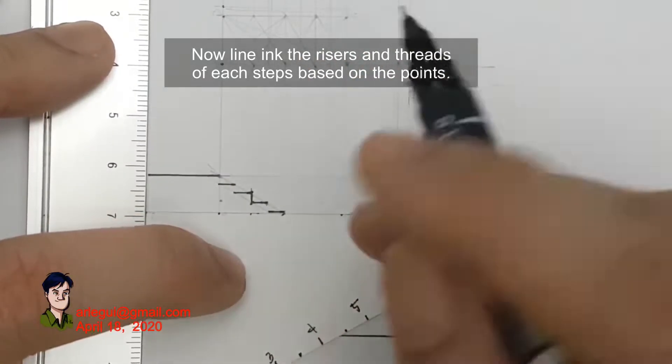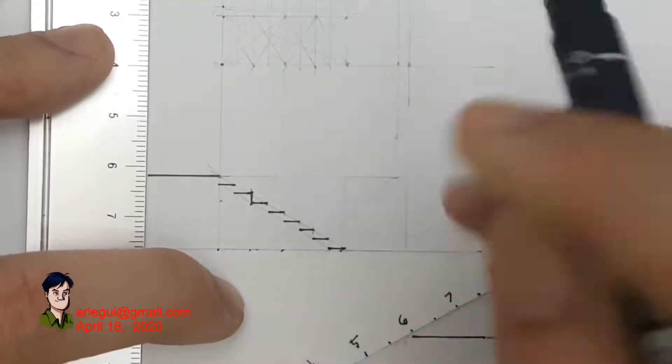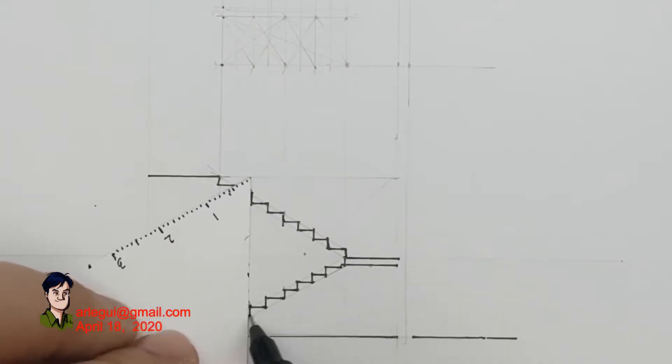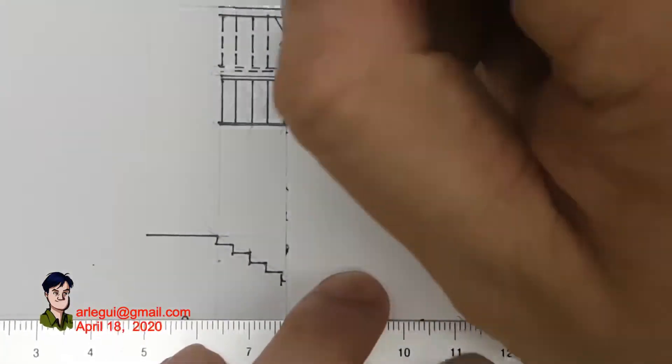This is the section of this staircase volume. I'm just projecting from the plan which is now what I'm inking.